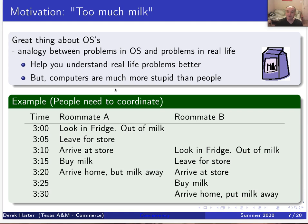The problem is we have roommates and want to coordinate buying milk whenever it's needed. The rule is: if you want milk, look in the fridge, and if there's no milk, go buy it and put it in the refrigerator. But we have a problem because we also don't want too much milk — it'll go bad. Roommate A comes home, sees no milk, leaves for the store. While away, roommate B arrives, sees no milk, and goes to buy milk too. The result: too much milk.